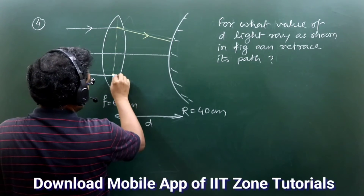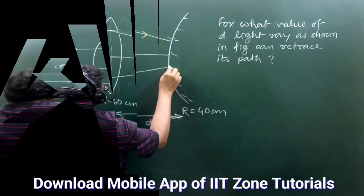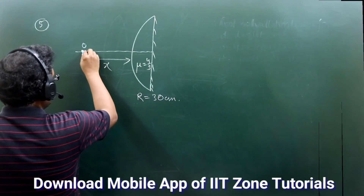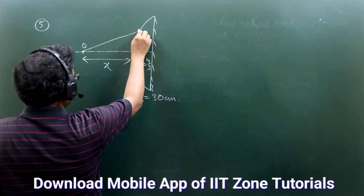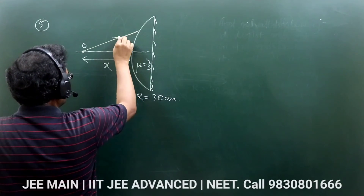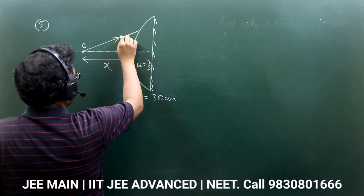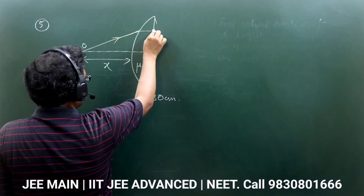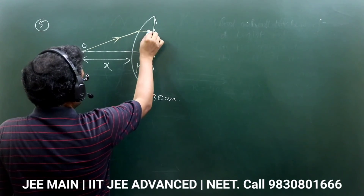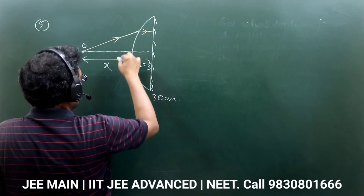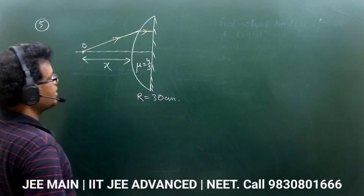In the ray diagram, light passing from the air to the surface should be traveling parallel to the principal axis.